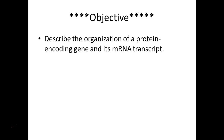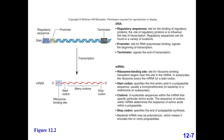The first thing we're going to look at is describing the organization of a protein-encoding gene and its messenger RNA transcript. If we have a structural gene encoding a protein, how are these organized? There are important segments relating to the DNA and the messenger RNA. The first thing we have are regulatory sequences — as the name implies, they regulate whether that gene's information is going to be expressed or used. Proteins typically bind to this particular region of the DNA to regulate whether it is expressed or not.